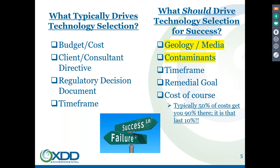As a remediation contractor, the rule of thumb is pretty much true: it takes about 50% of the cost to get about 90% of the way there, and then basically the rest of the cost to get that last 10%.